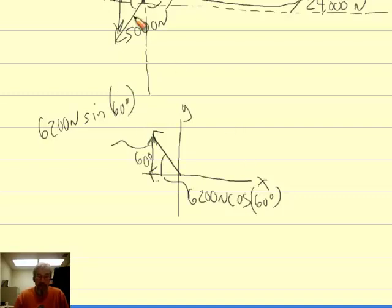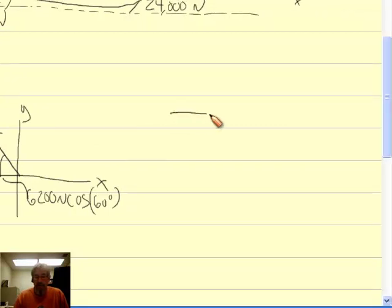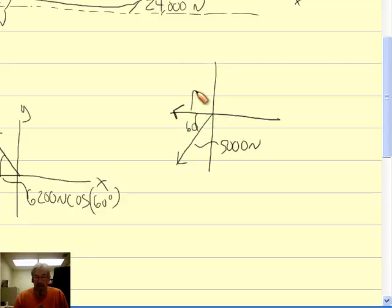I can do a similar analysis with the 5,000 newton vector. Here's my axis system. There's my 5,000 newton vector. Here, this component, well, this is 60 degrees. Everything's symmetrical here, which is nice. This is 60 degrees, so this is going to be 5,000 newtons times cosine of 60 degrees.